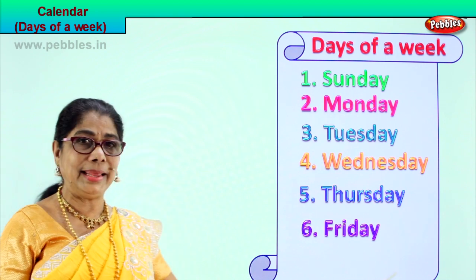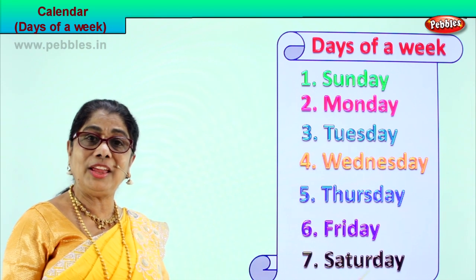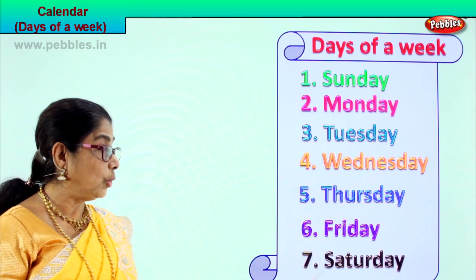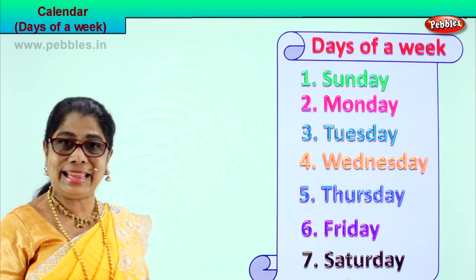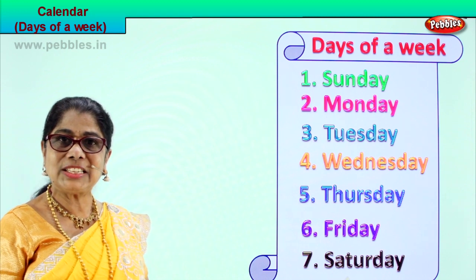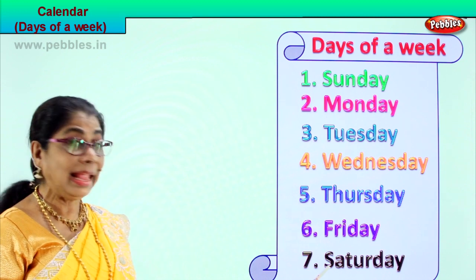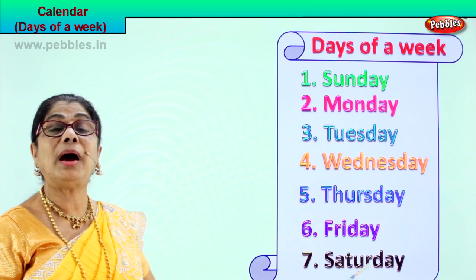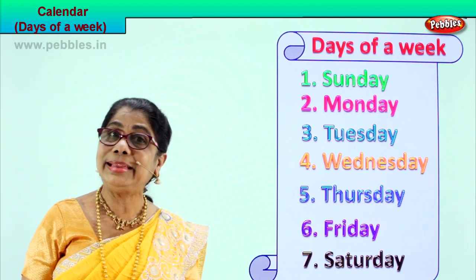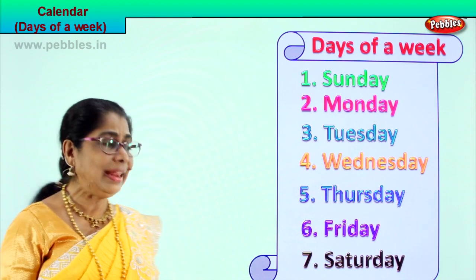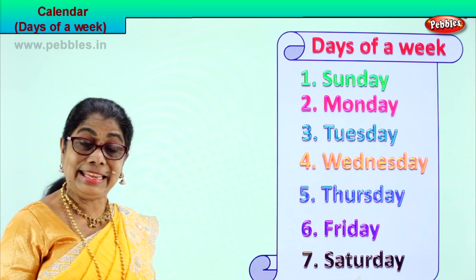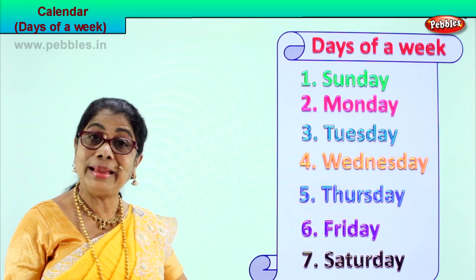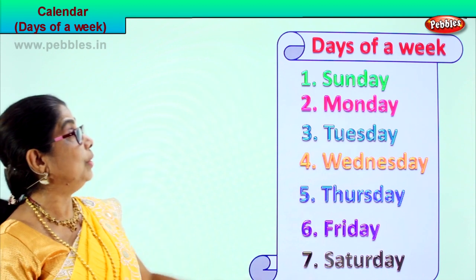Which is the last and seventh day of a week? The seventh day of the week is Saturday. Spell Saturday: S-A-T-U-R-D-A-Y. Saturday. Good.